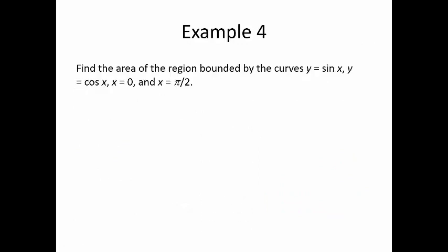Let's do a trig one — this one's a lot more complicated. Find the area of the region bounded by the curves y equals sine of x and y equals cosine of x, between x equals 0 and x equals pi over 2. The graph is going to be incredibly important to figure this out.